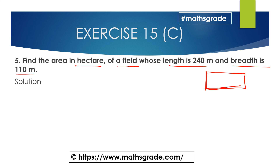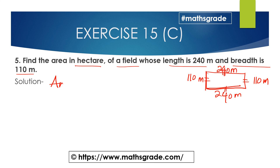This is a rectangular field having length 240 metres and breadth 110 metres. In rectangles, opposite sides are equal, so both lengths are 240 metres and both breadths are 110 metres. We need to find the area in hectares.